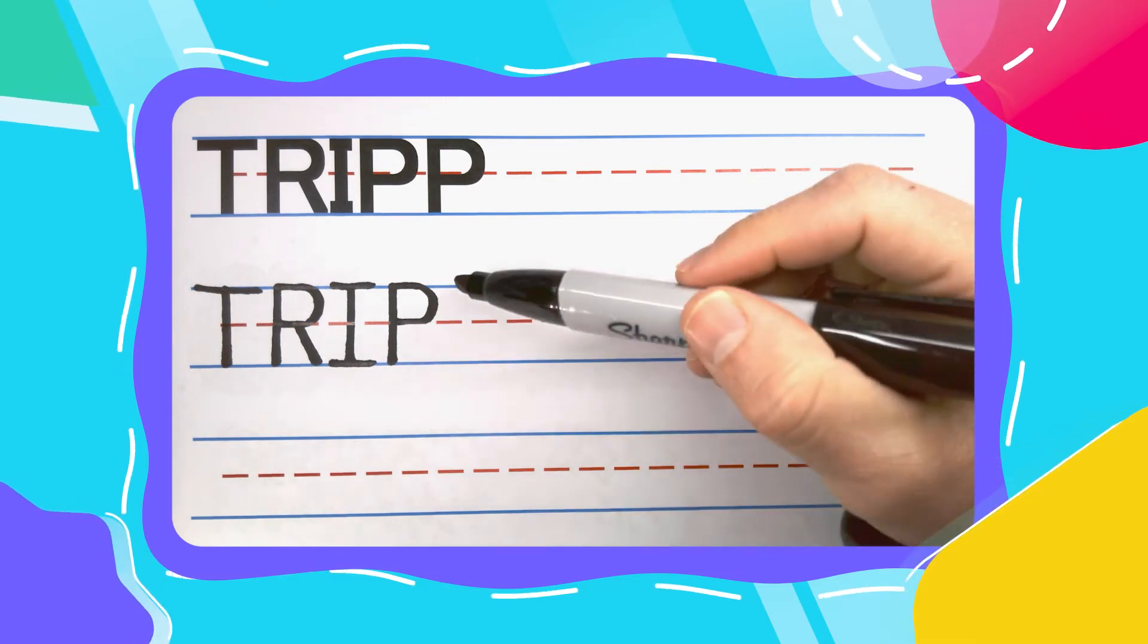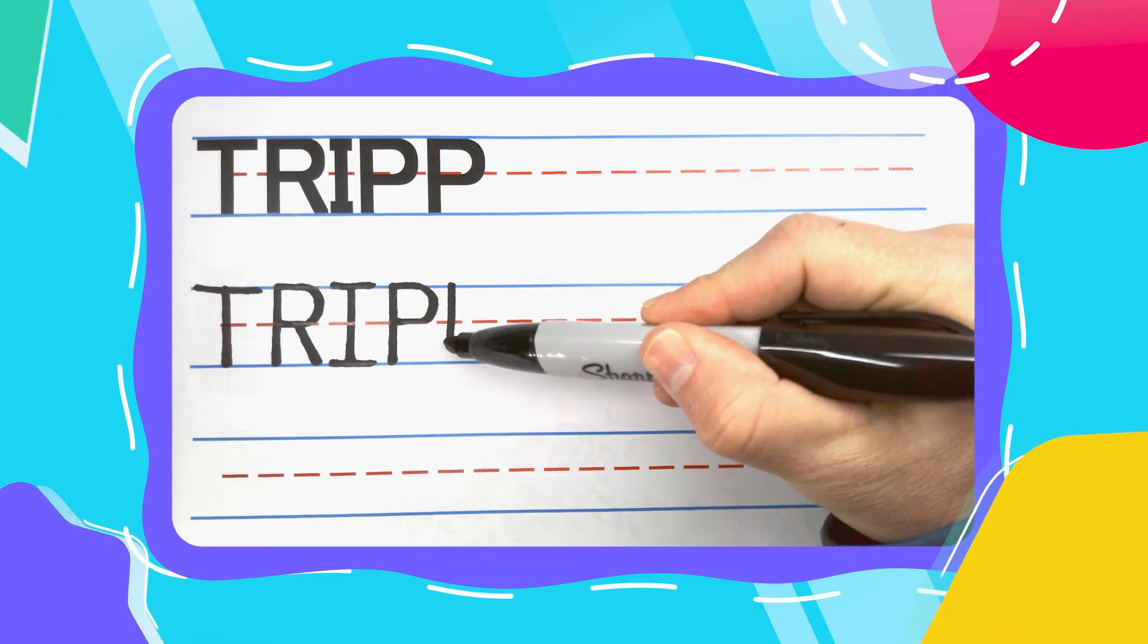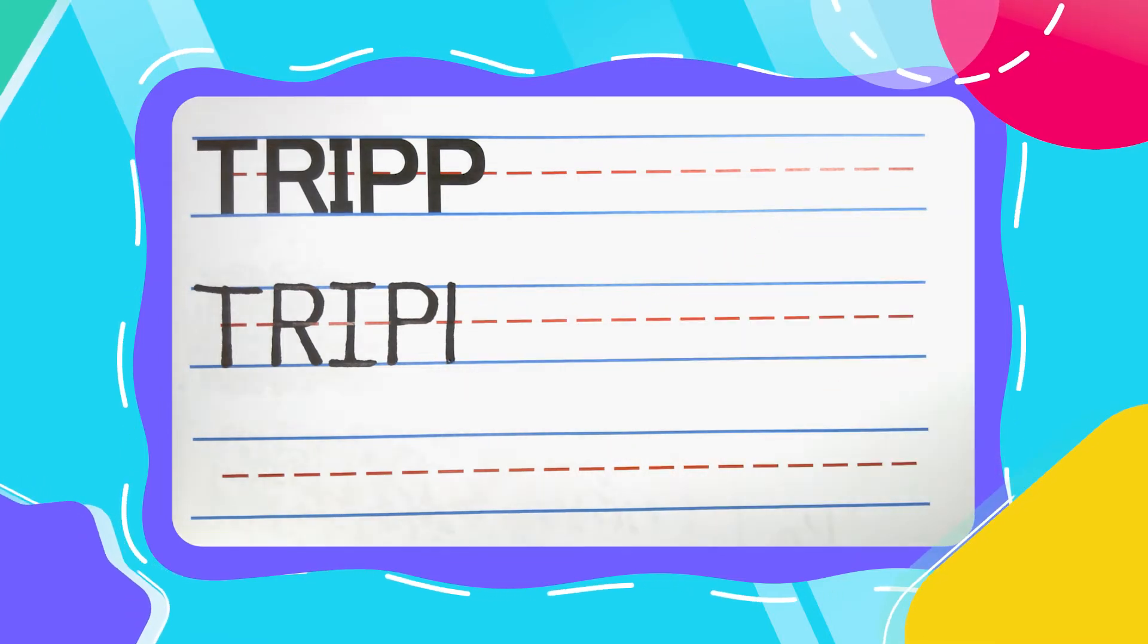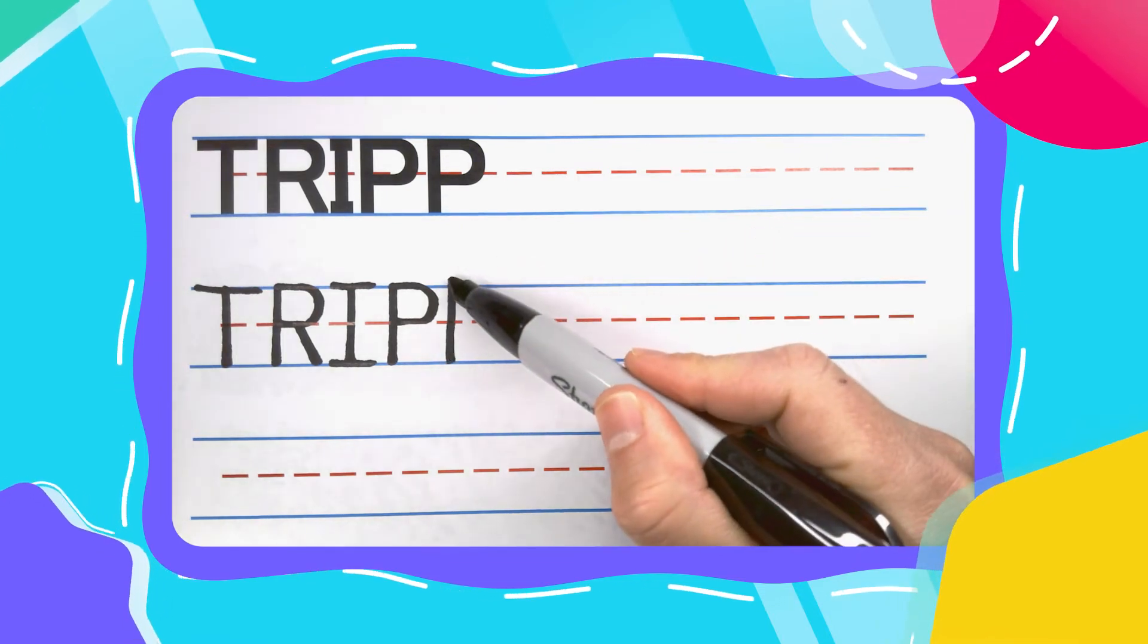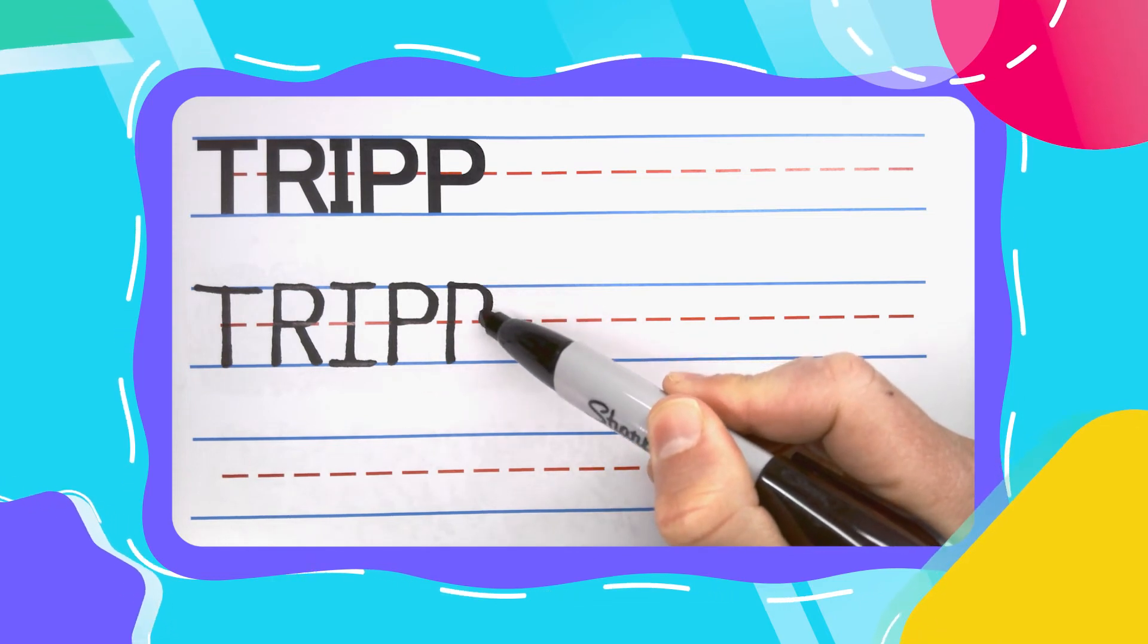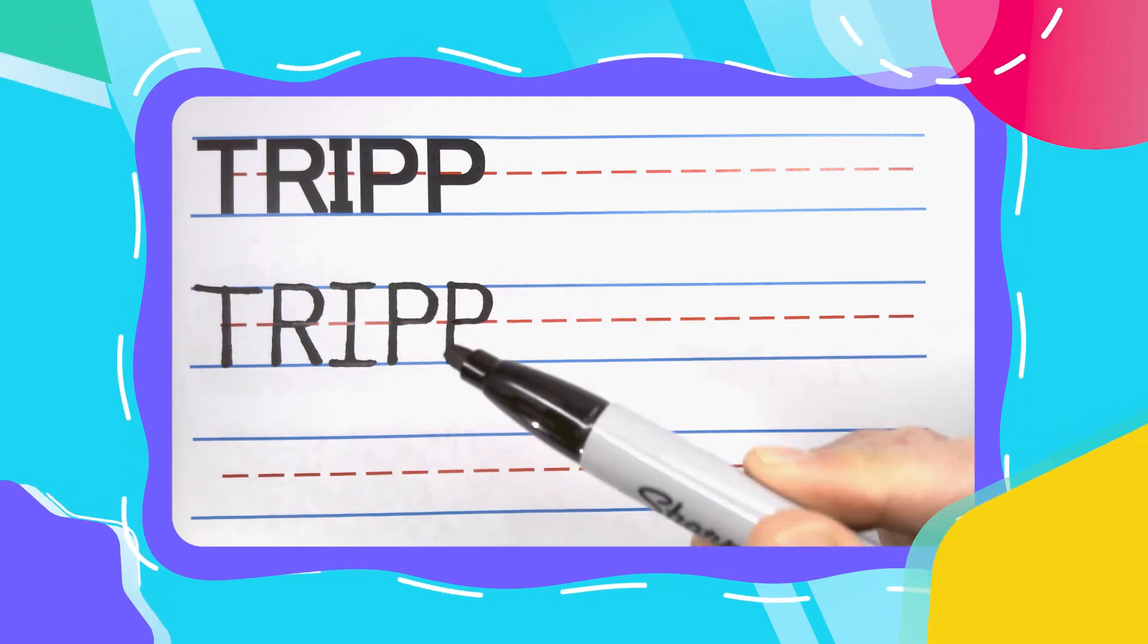Let's give TRIPP another P. Same as the first, but a little faster. Straight down, back to the top, out to the right. Curve, curve, curve. Stop at the middle, come back to the left.